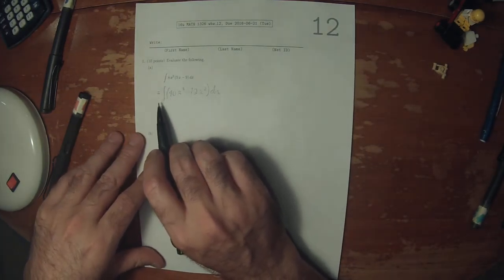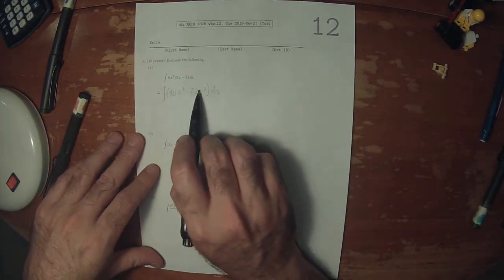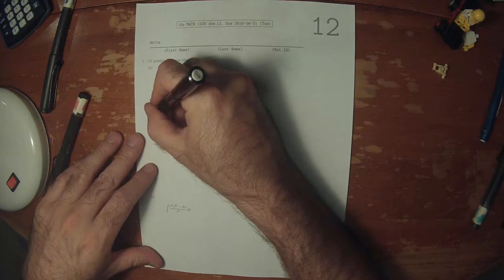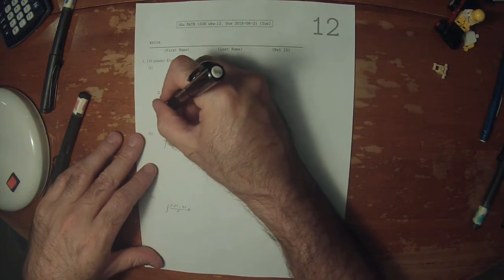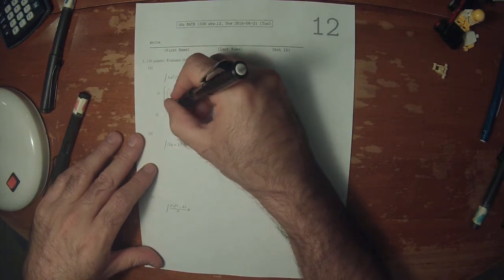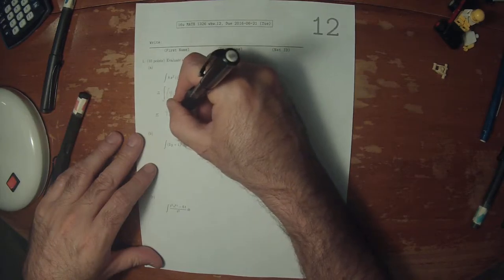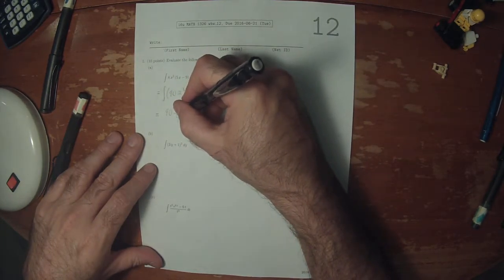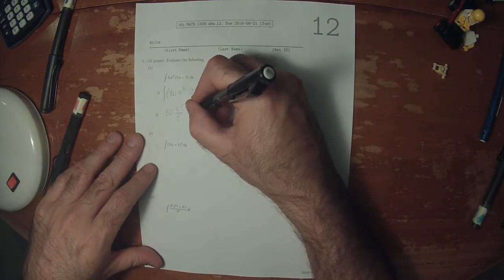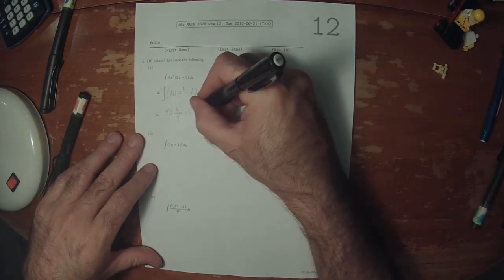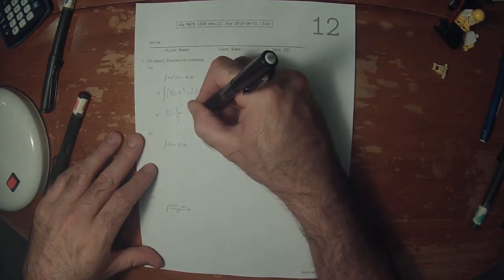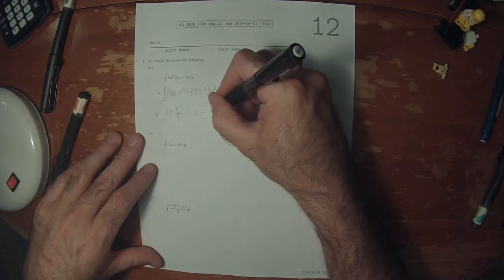And now each of these terms is one of the antiderivatives that we know. So this would be 40x to the 4 over 4, and then minus 72x to the 3 over 3, plus a constant.